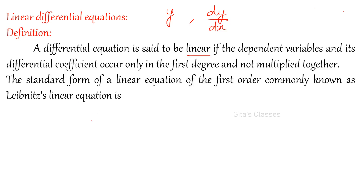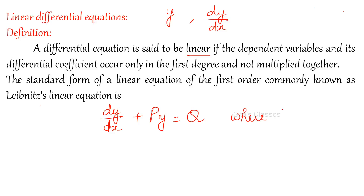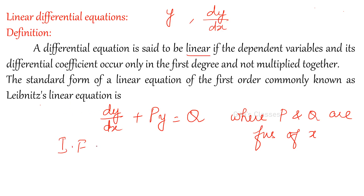The standard form of the linear equation of first order — also known as Leibniz linear equation — is given by dy/dx plus P times y equals Q, where P and Q are functions of x. Any function: it may be tan x, sin x, x squared, log x — any function. If it is of this form, we find the integrating factor equal to e to the power integral of P dx.